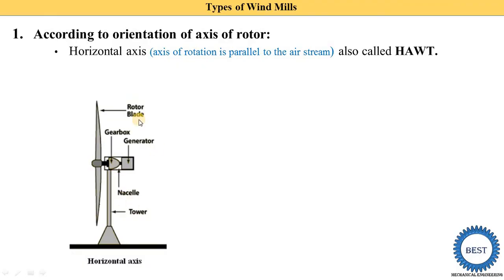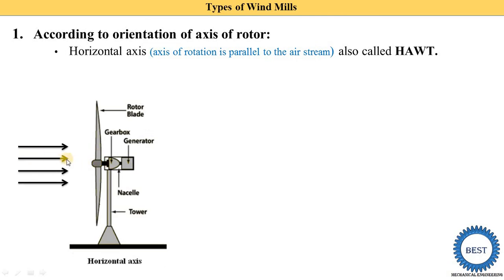Here you see the diagram of a horizontal axis wind turbine. This is the rotor or shaft, and it is horizontal. The axis of rotation is parallel to the air stream — both the axis of the wind stream and the axis of the rotor rotation are the same. That is why it is called a horizontal axis windmill.